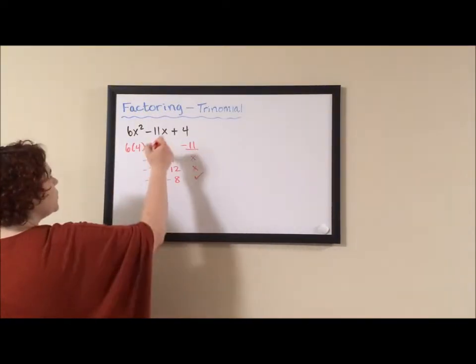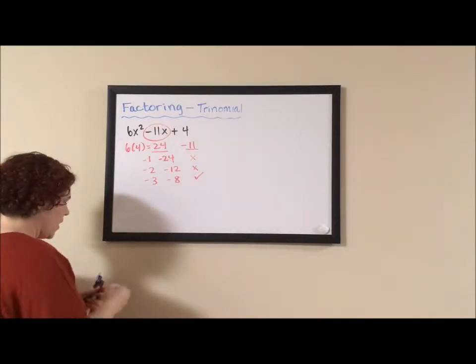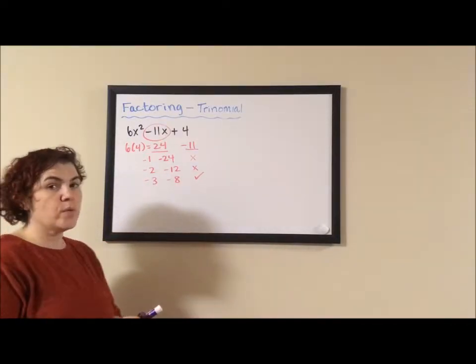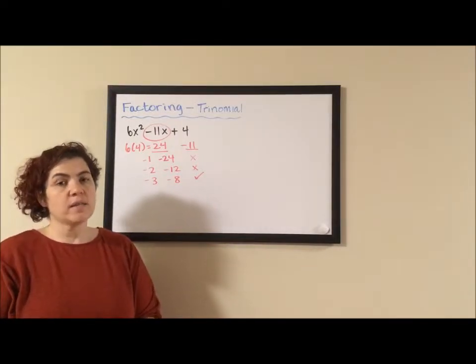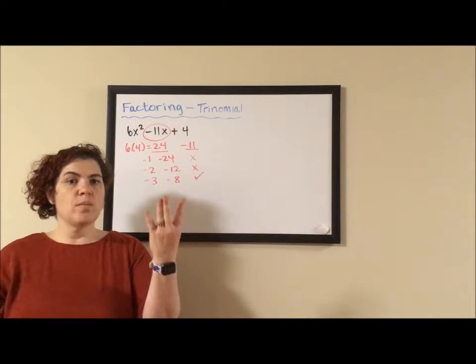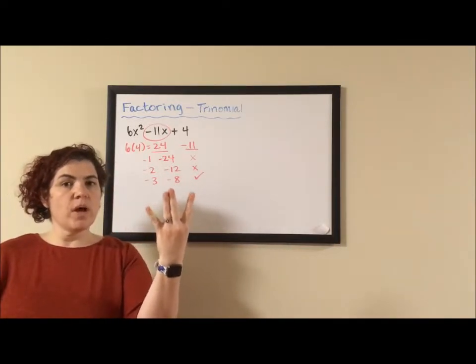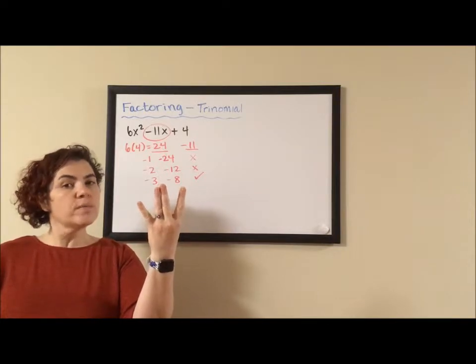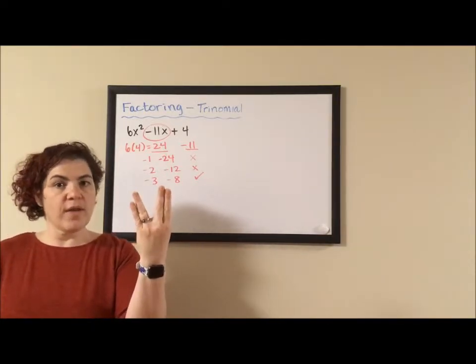So what I'm going to do is I'm going to replace 11x with the two factors that got us there. What we're doing is we're doing the inverse of multiplying binomials. And when you multiply binomials, your last step is to combine like terms, which means you might add two middle terms together. So we're going to take this three term polynomial, find the two terms that were added to get to that middle term, write a four term polynomial, and then factor by grouping.